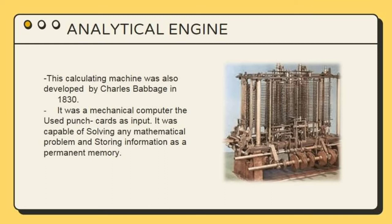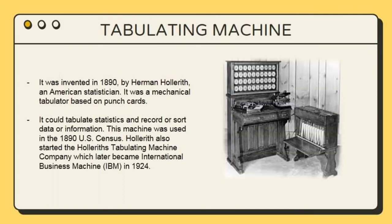The next one is the Analytical Engine, also a calculating machine developed by Charles Babbage in 1830. It was a mechanical computer that used a punch card as input. It was capable of solving any mathematical problems and storing information as a permanent memory.